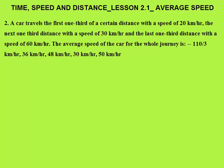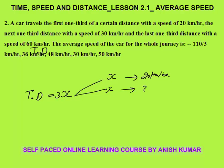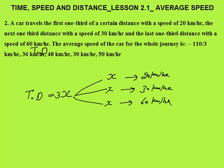The second question: a car travels the first one-third of a distance at 20 km/h, the next one-third at 30 km/h, and the last one-third at 60 km/h. This is very similar to Question 1. Pause the video and try to solve using assumption. Let total distance be 3x, so each one-third portion is x. We cover x at 20, x at 30, and x at 60 km/h.